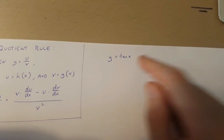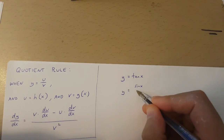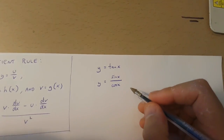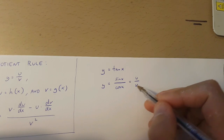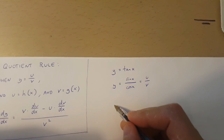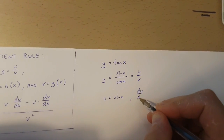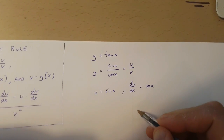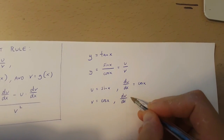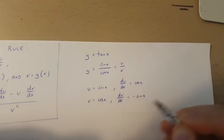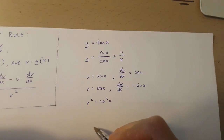Now y equals tan x is the same as y equals sin x over cos x. I'm going to make this equal to u over v, where u and v are both functions of x. If u is sin x, then du over dx is equal to cos x. When v is cos x, dv over dx is equal to minus sin x. And v squared is equal to cos x squared.